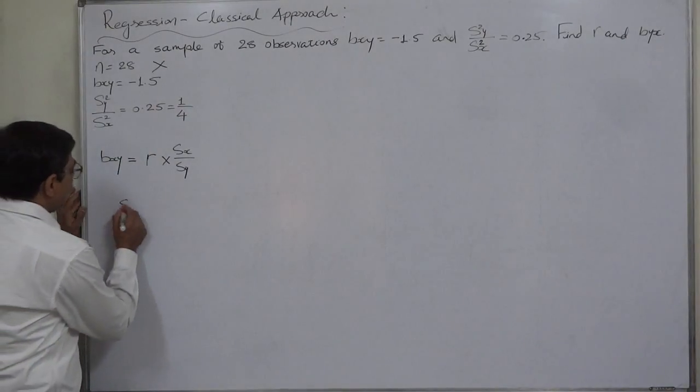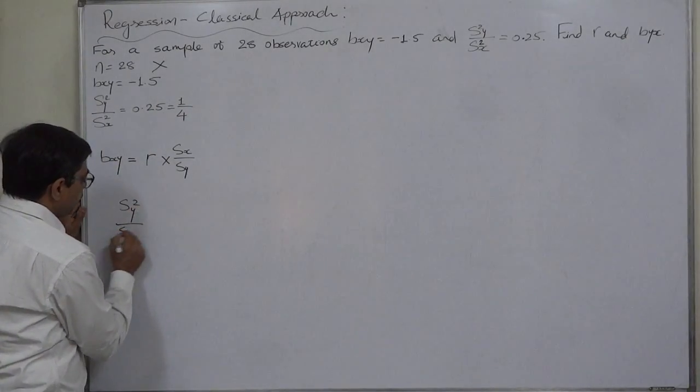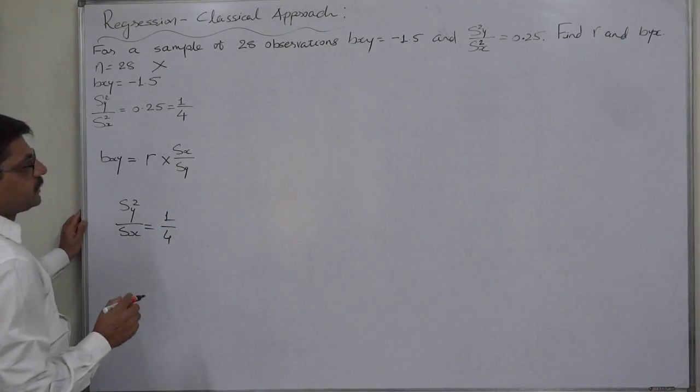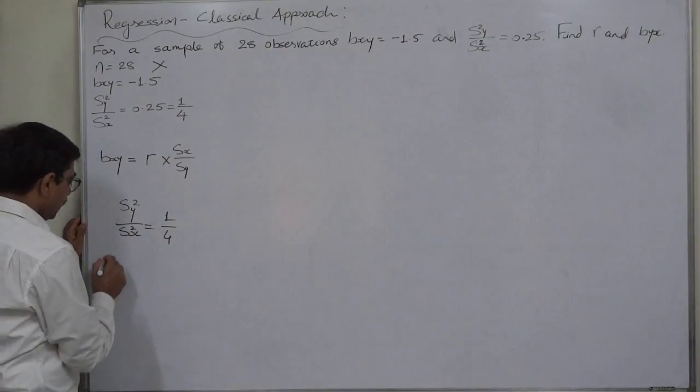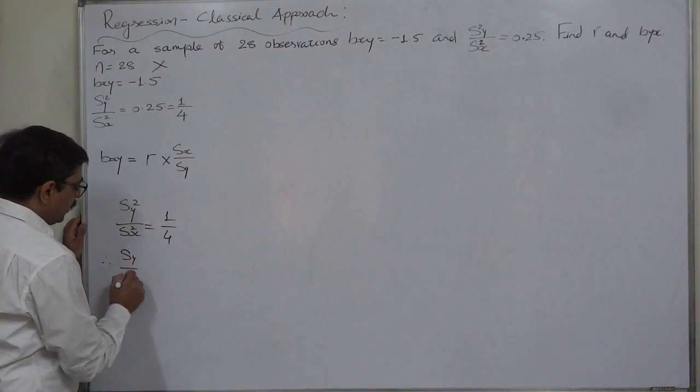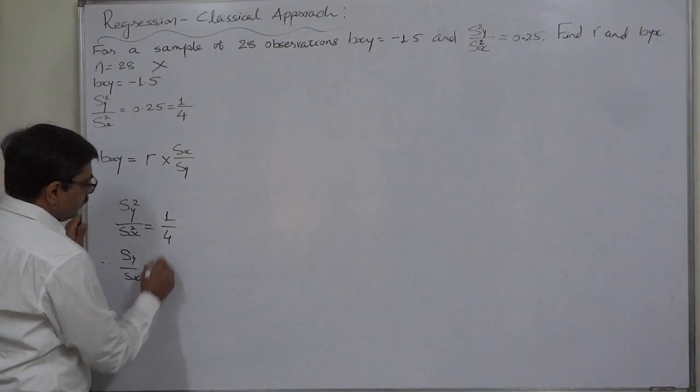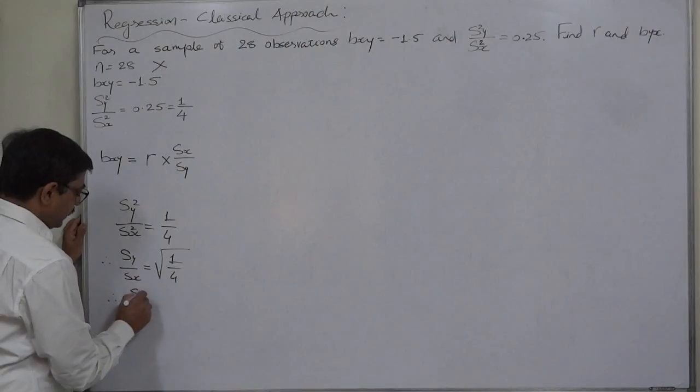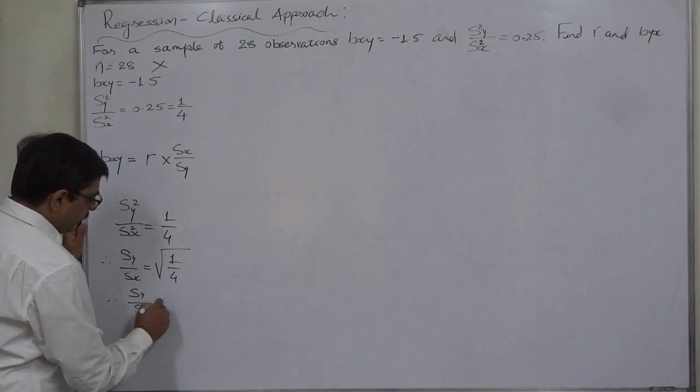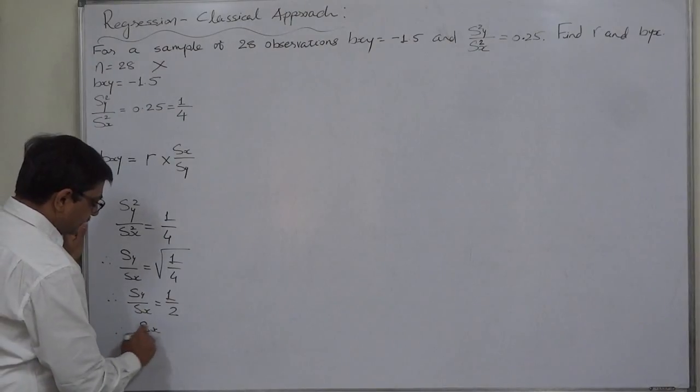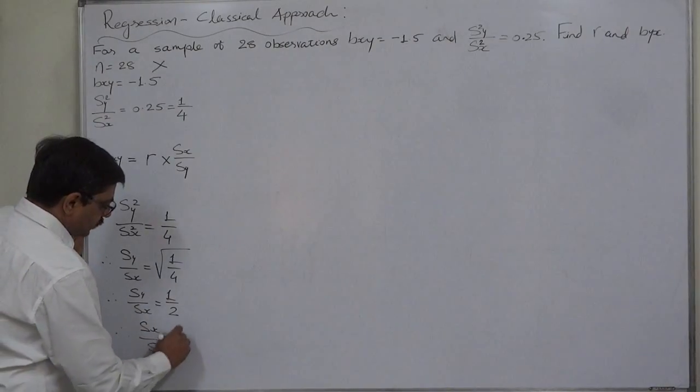Now first of all, Sy square upon Sx square equals to 1 by 4 or 0.25. Therefore, Sy upon Sx will be under root 1 by 4. Therefore, Sy upon Sx will be 1 by 2. And therefore, Sx upon Sy is 2.